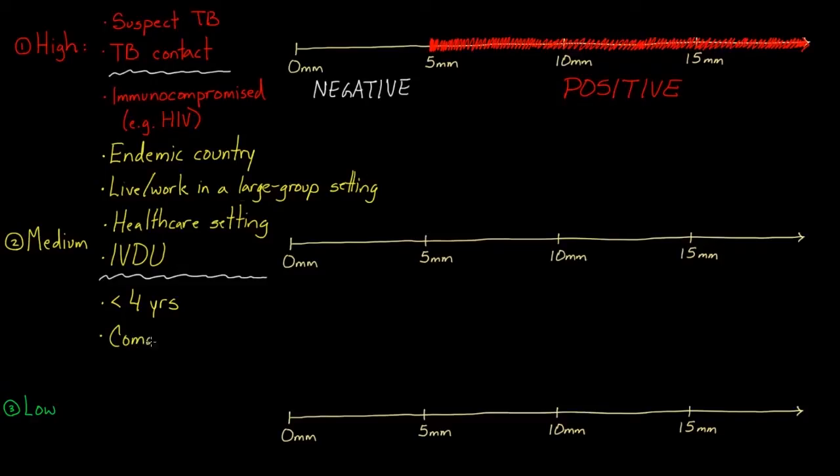And also, people that are actually fighting other diseases. So we call those comorbidities. Let's say you have already gotten a disease like diabetes, or let's say your kidneys aren't working properly. If you already have other diseases, then you're also at risk. Because if you did get TB, it would be even tougher to fight it off.